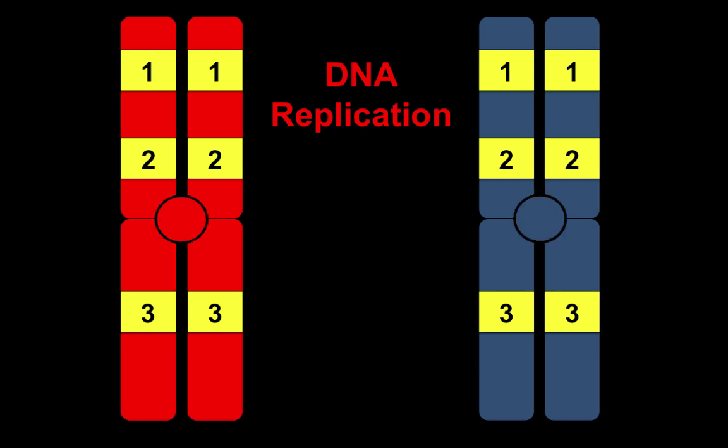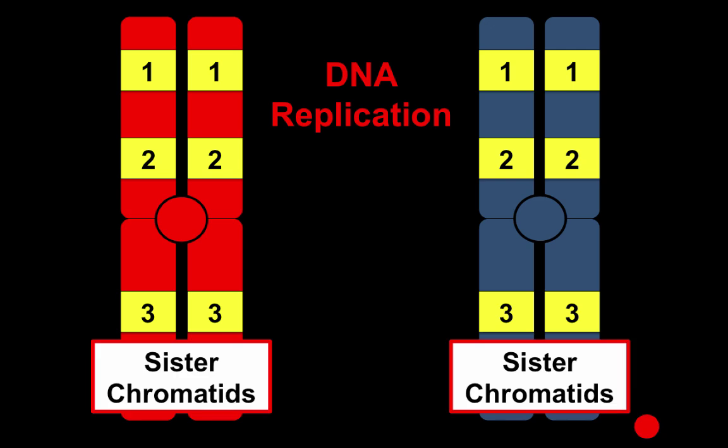So here's an example of a homologous pair. One was from mom, one was from dad. They have the same genes. Once we go through DNA replication, those get doubled. So when you see that standard X shape that we see with chromosomes, those are actually replicated chromosomes. So really we're doubling the amount of DNA. And in each of these we have two sister chromatids that makes up a replicated chromosome.